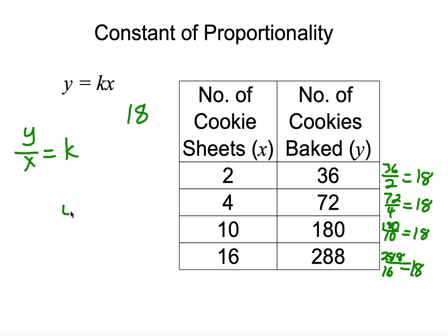It also lets us know that our equation would be y equals 18x. Because we take the direct variation, and we just substitute the constant of proportionality, or the unit rate, as 18.